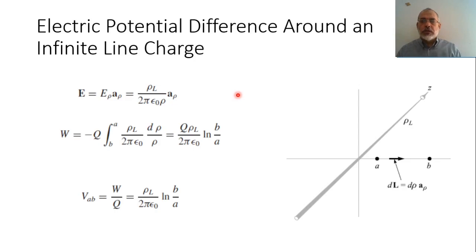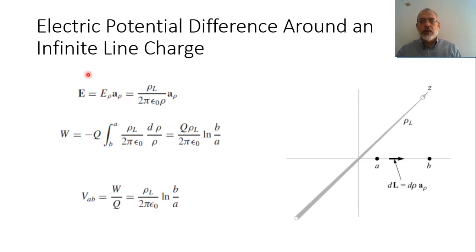If we have an infinite line charge with line charge density rho_l, its potential was obtained from the electric field, which is rho_l over (2π ε) in the rho direction.